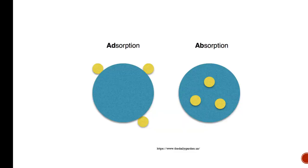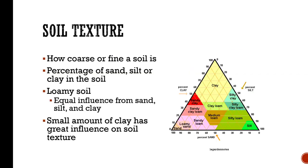Adsorption and absorption are two different things. Adsorption means something attaches itself to the surface of — in this case — soil. Absorption is when things are taken up, like with roots. Soil texture is how coarse or fine soil is — it's the percentage of sand, silt, or clay in the soil, and this is something we're going to do in our lab on the 22nd. Loamy soil is what you want; that's equal influence from sand, silt, and clay.